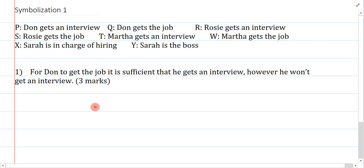So this first one, for Don to get the job, it is sufficient that he get an interview. However, he won't get an interview. Now, it's pretty easy to spot, however, is a connective. We also have the connective, it is sufficient. We see that we have a comma here, we have a won't here, and that's pretty much that.